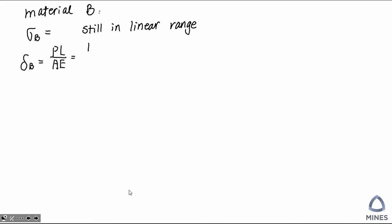However, what length are we going to use? Are we going to still use the 10 inches used before? The answer is no — we have to use the length for this specific segment, which is 12 inches. To calculate the Young's modulus, we have to use the linear part of the material B stress-strain diagram. We can choose any linear segment; I am going to use the maximum stress and maximum strain values. This gives us the total deformation in material B.